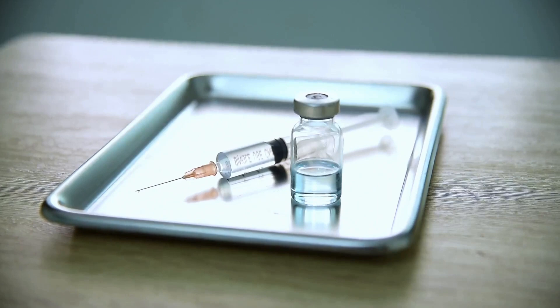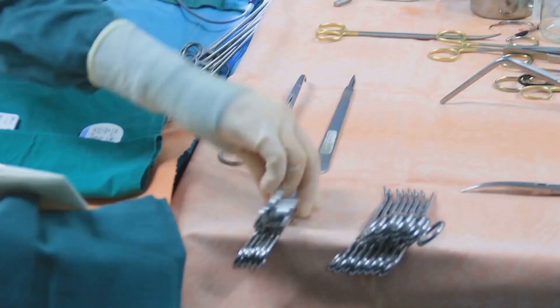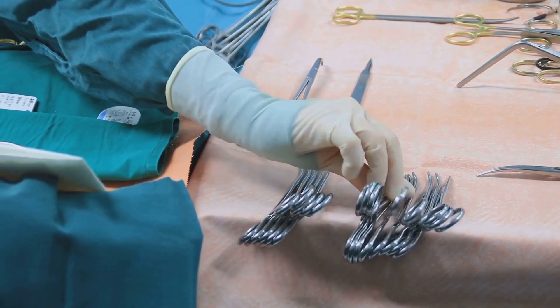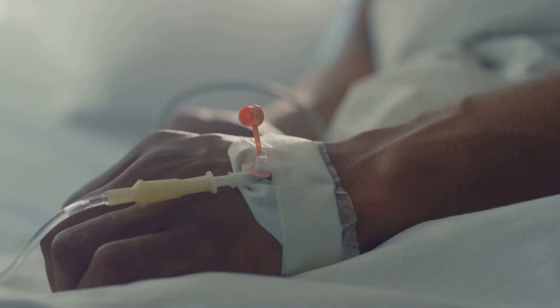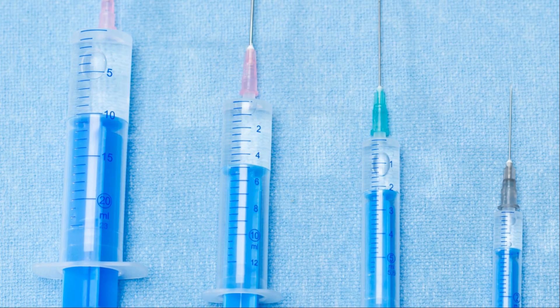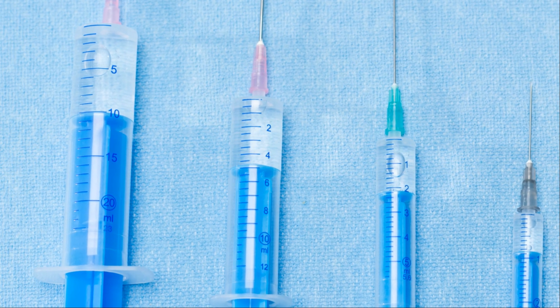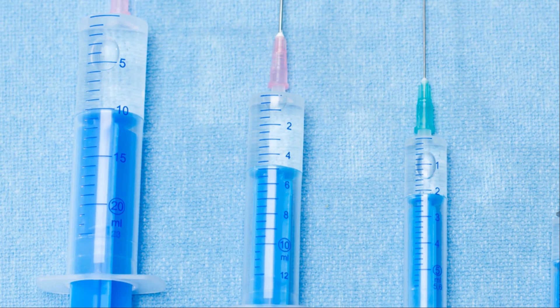Before you even think about picking up a cannula, let's talk about the tools of the trade. Just like a surgeon needs their scalpel, you need the right equipment to perform a successful cannulation. First things first, you'll need a cannula itself. These come in different sizes or gauges, with smaller gauges for thinner veins and larger gauges for bigger veins or rapid fluid administration.